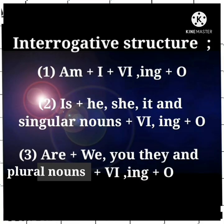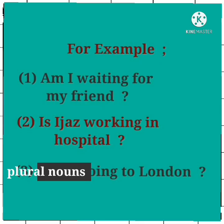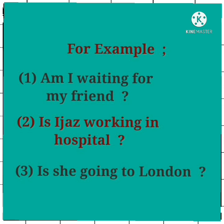Now the interrogative structure. First person: am + I + V1-ing + object? Second person: is + he/she/it/singular nouns + V1-ing + object? For example: 'Am I waiting for my friend?' 'Is Ejaz working in hospital?' (Pashto: Sa ejaz pa hospital ki kar kai.)